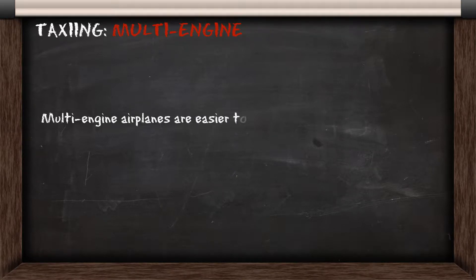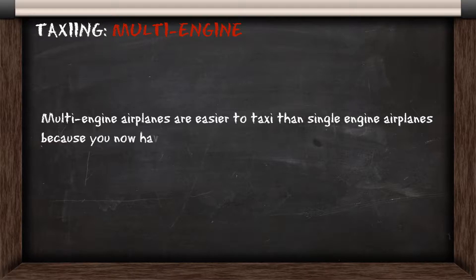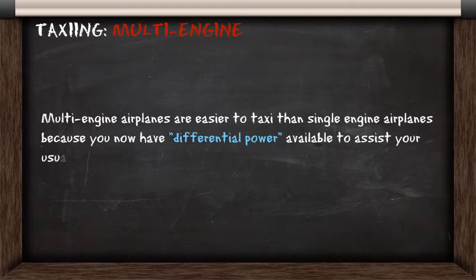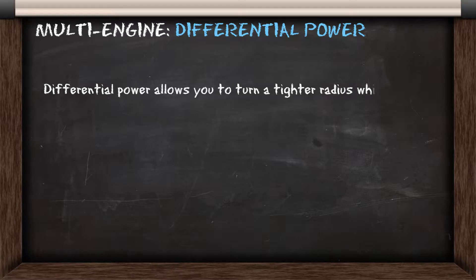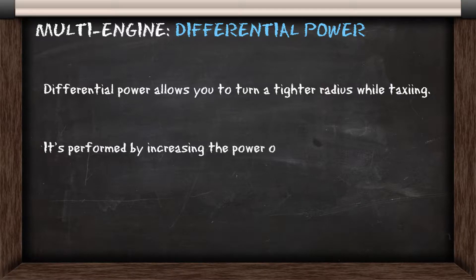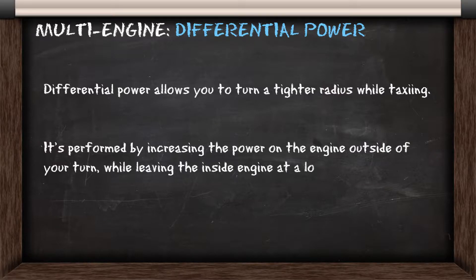Multi-engine airplanes are easier to taxi than single-engine airplanes because you have what's called differential power, and this assists you in your usual brake and rudder technique. Differential power allows you to turn at a tighter radius while taxiing. You perform it by increasing the power on the engine outside of the turn, while leaving the inside engine at a lower power setting.